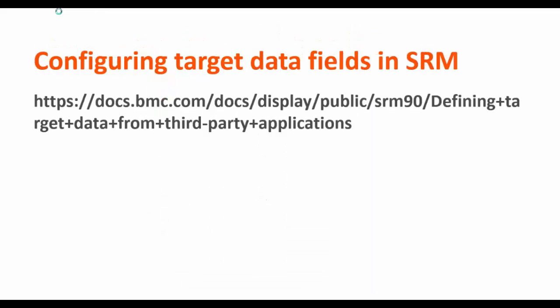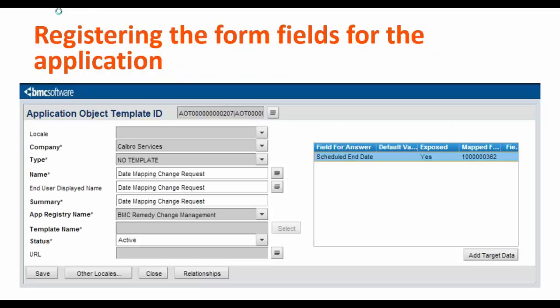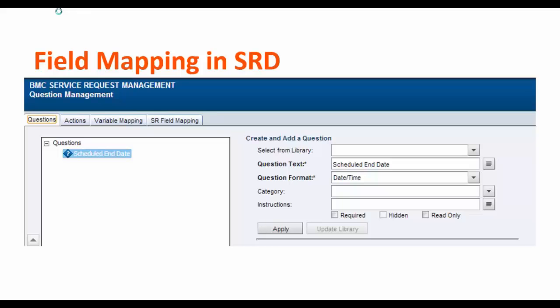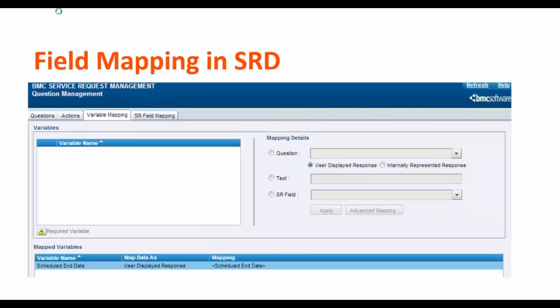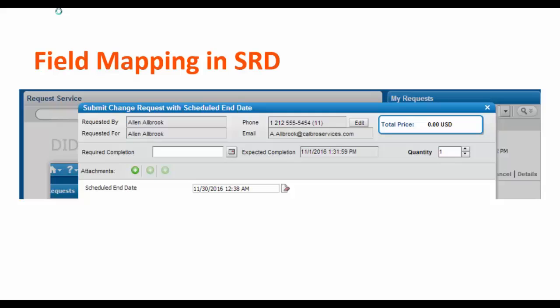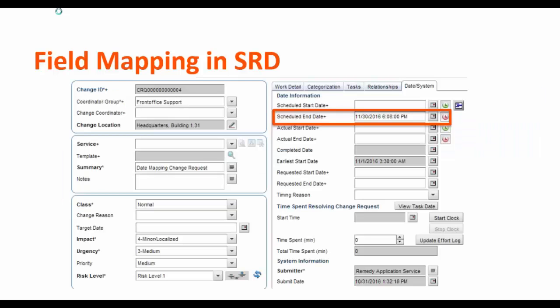For more information on the same topic, please look at our online documentation for defining target data for third party applications. Once the fields are defined, you can use them in your AOT. Map the same on your PDT and map to the user question's response in variable mapping. Now when you log in and select the data for scheduled end date, the same date would be reflected in the backend change application created for this service request.